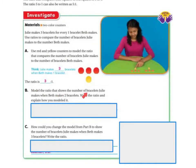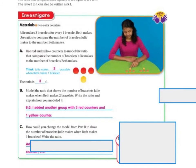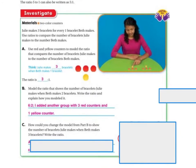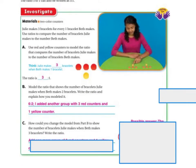Model the ratio that shows the number of bracelets Julia makes when Beth makes 2 bracelets. Write the ratio and explain how you modeled it. It's going to be 6 to 2, because I added another group of 3 red counters and 1 yellow counter. So when Beth makes 1 bracelet, Julia makes 3. When Beth makes 2 bracelets, Julia makes 6. When Beth makes 3 bracelets, it's going to be 9.